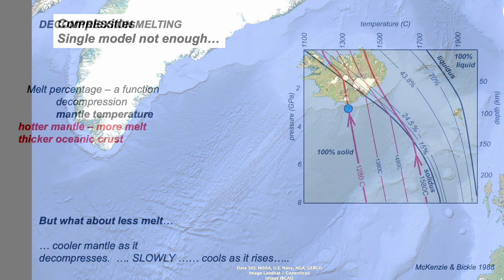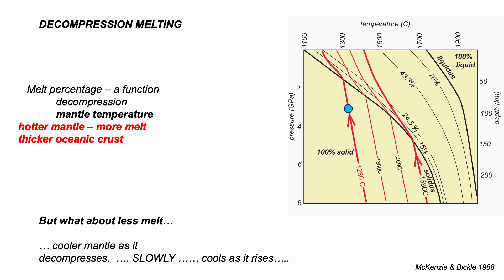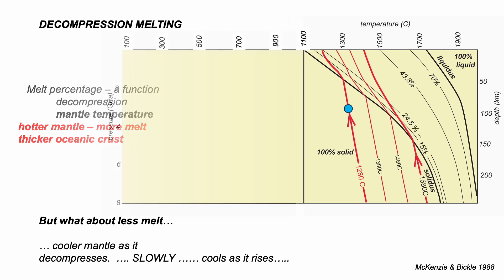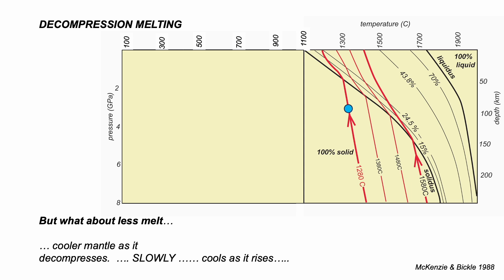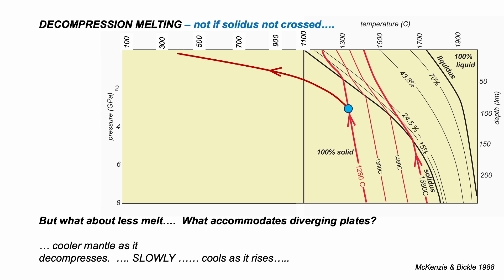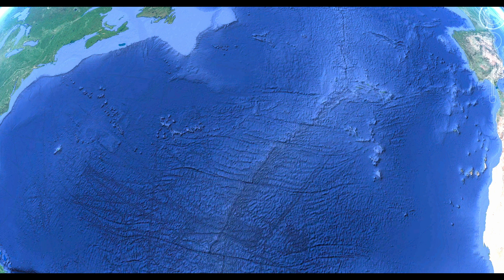Back to melting: hotter mantle makes for more crust. But these understandings rely on decompression happening quickly, so that the rising mantle retains its thermal energy rather than diffusing it away to the surface. For most strain rates this is fine, because rocks hold on to heat very efficiently. But what if the decompression is slow? The decompressing mantle could then diffuse heat away as it approaches the surface, so that if it happens slowly enough, it would never cross the solidus — in other words, it wouldn't melt. No melt, no crust, so no dykes. Then what structures would accommodate the plate divergence? Let's examine a different style of plate structure where mantle rocks, not pillow basalts, lie on the seabed.